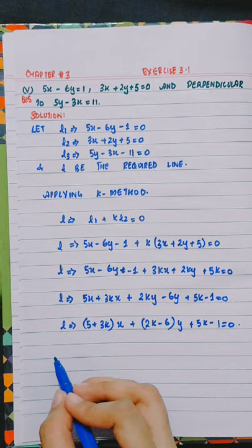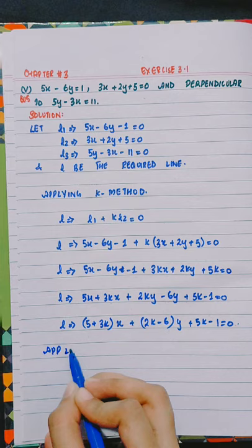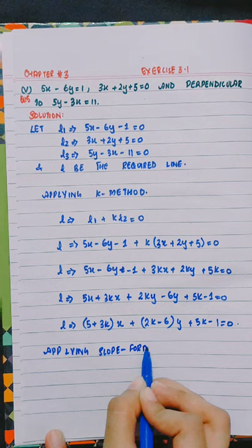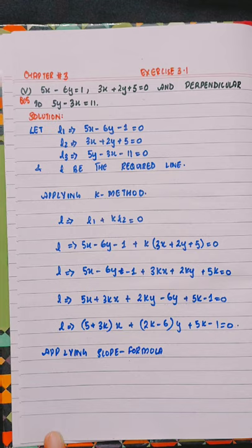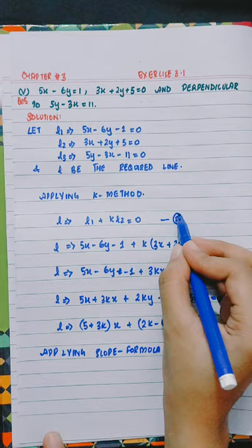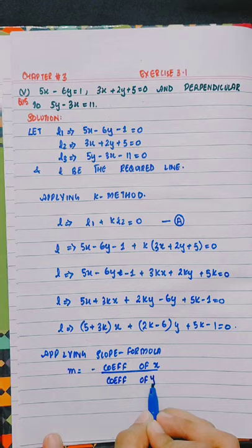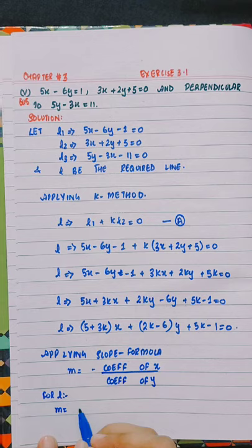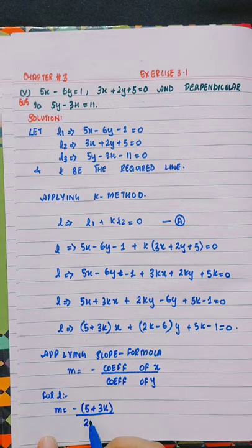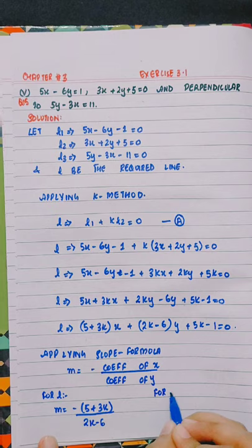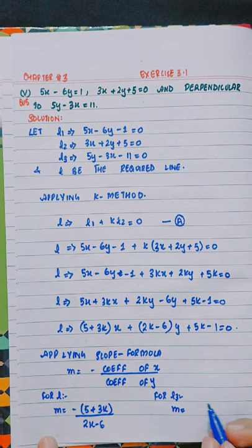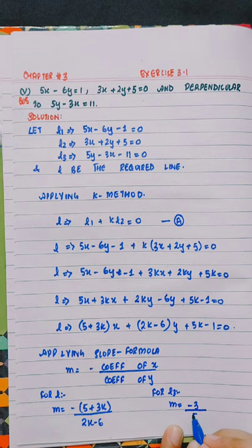Applying the slope formula to this equation — calling it equation A — m equals to minus coefficient of x divided by coefficient of y. For L, m equals to minus 5 plus 3k divided by 2k minus 6. And for L3, m equals to minus coefficient of x is minus 3, divided by 5, which gives 3 divided by 5.